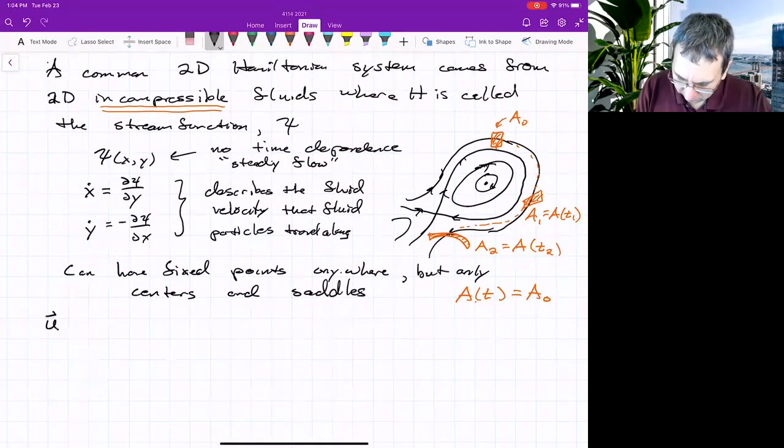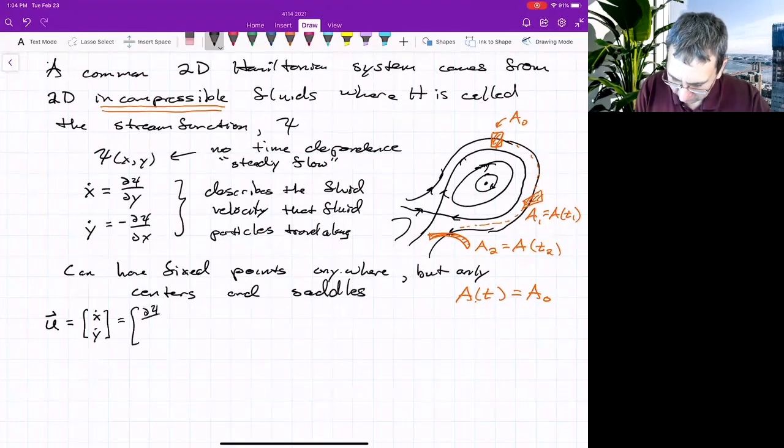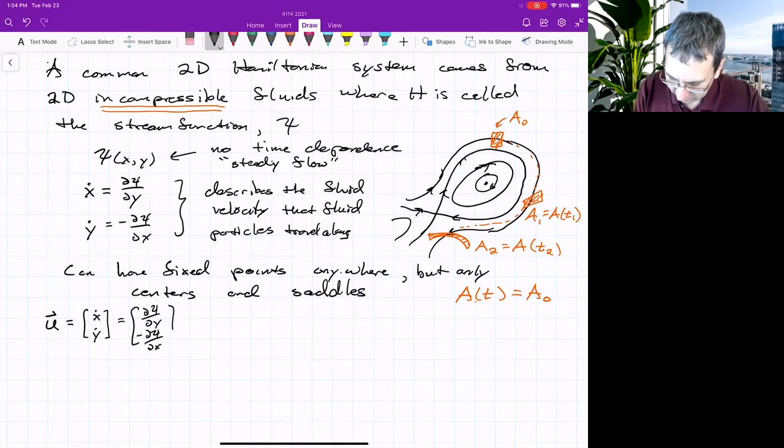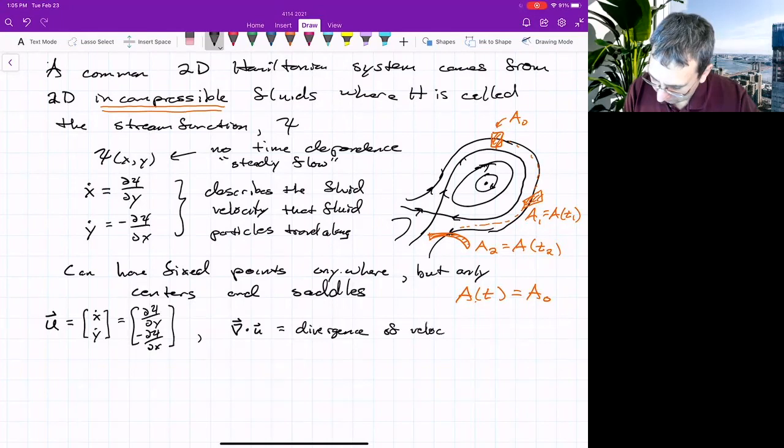So what if we write this as x dot and y dot, and then plug in what they are, partial psi partial y, negative partial psi partial x. To be incompressible, you need the divergence of the fluid flow to be zero. So the divergence of the velocity field u, how do we calculate that? It's partial partial x of x dot plus partial y dot partial y.